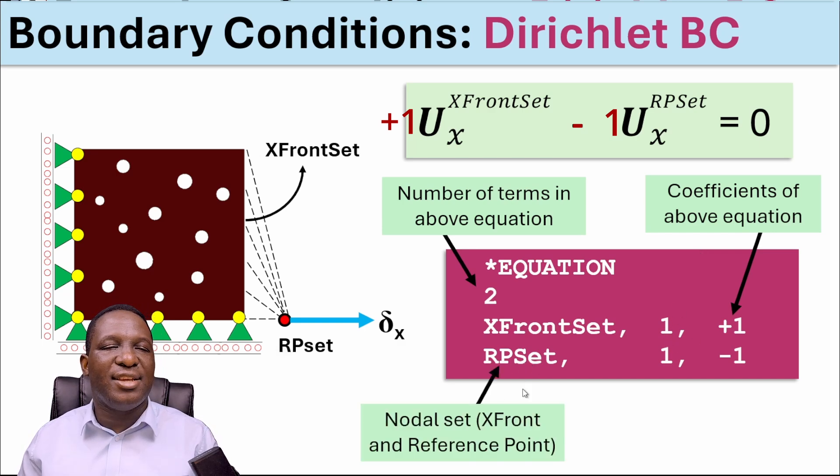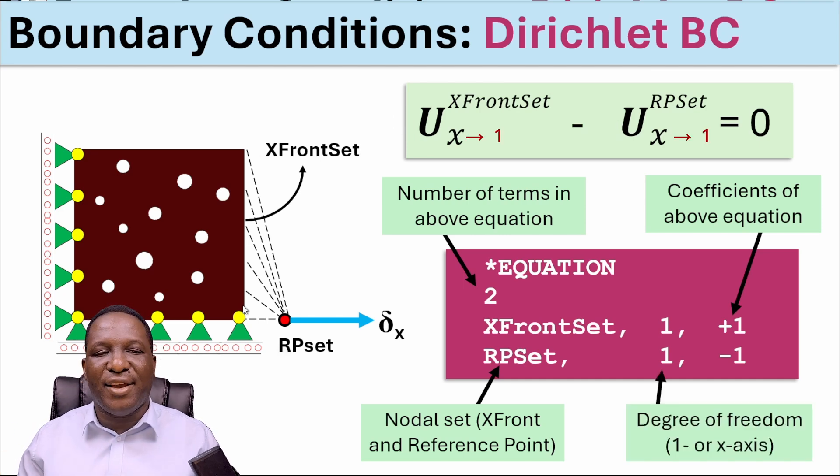What you've got here—RPset—is the nodal set. RPset is a single node and then XFrontSet is basically all the nodes on that surface. This is how you make that kinematic constraint. The degree of freedom for which we are interested in this instance is in the one axis. You need to also do it for the two axis if it's a 2D problem.